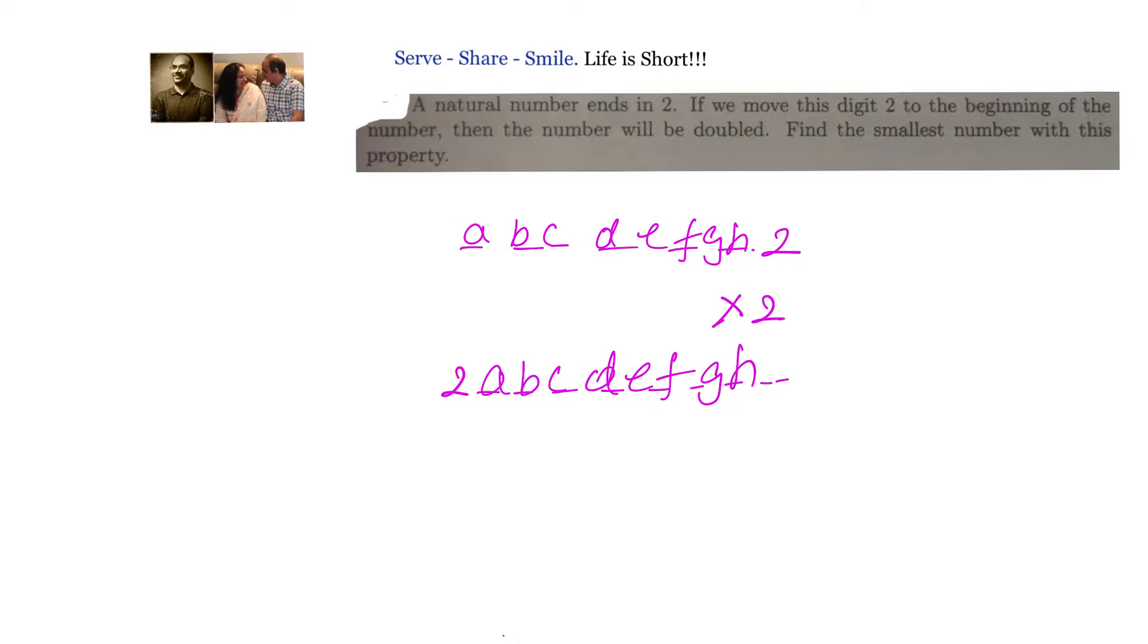Hope you understood what we are looking at. If the number is A, B, C, D, E, F, G, H ending with 2, you multiply with 2, this 2 will go to the first position. The remaining digits will remain the same in this number also. Because they are just saying switch the 2 from the rightmost to the leftmost, the number automatically will become double. So we need to find out what is this number.